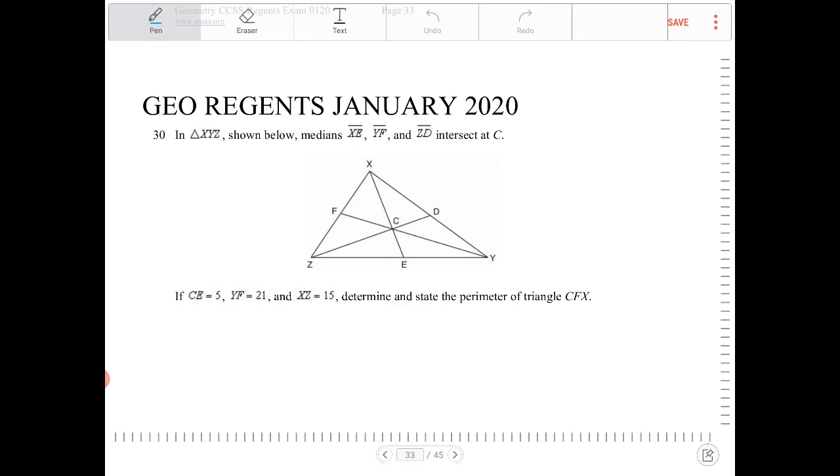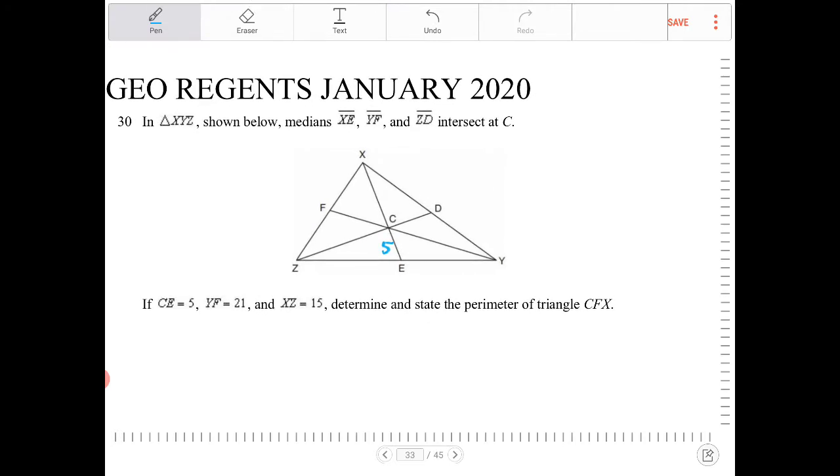If CE is equal to 5, YF is equal to 21, so the entire length is 21. XZ is equal to 15. Determine and state the perimeter of triangle CFX. So the length of YF is equal to 21.